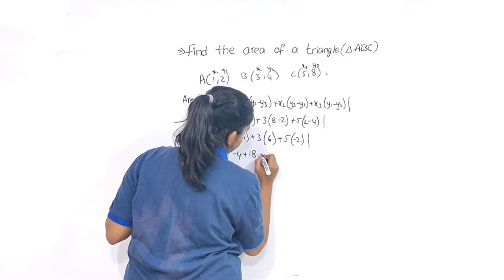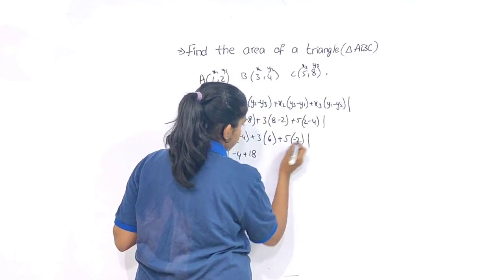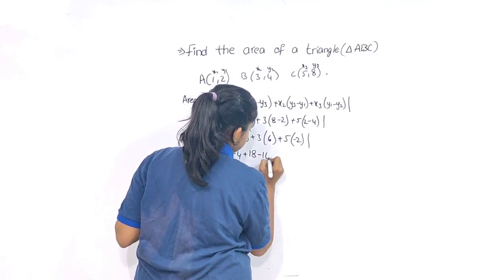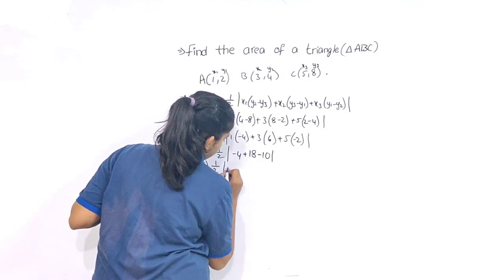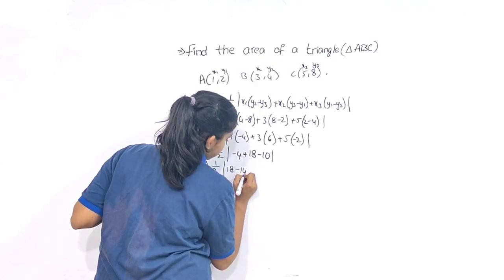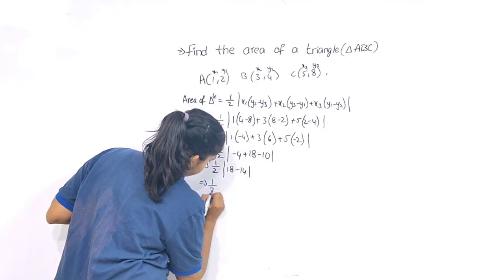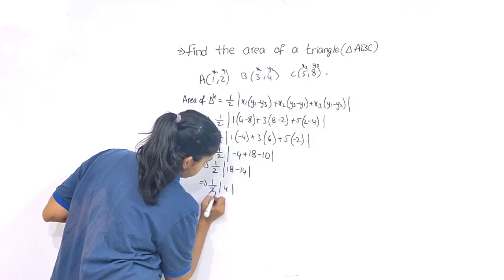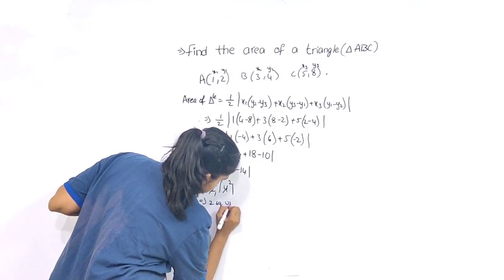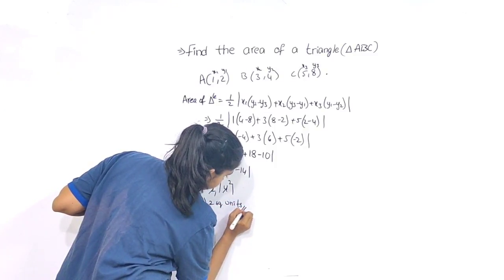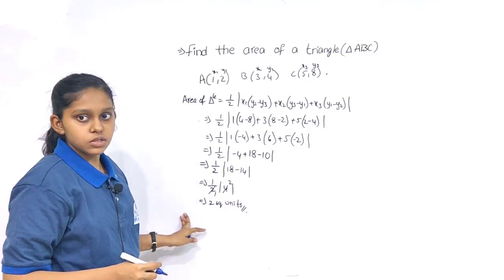Minus 4 plus 18 plus 5 times 2 is 10, but there is minus. Minus 4 plus 18 minus 10, so we get 2 square units. Now this is the lengthy process.